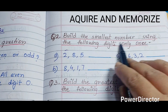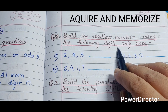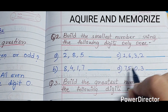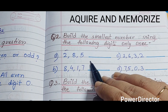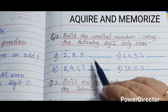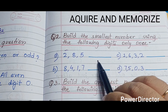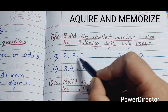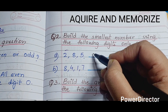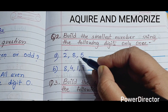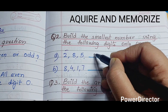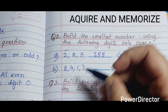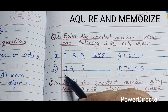Now, build the smallest number using the following digits only once. We have to use all the given digits to make the smallest number. With digits 2, 8, 5 the smallest number we can make is 258.